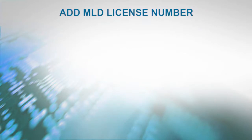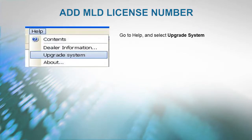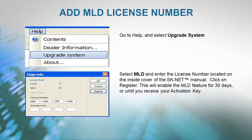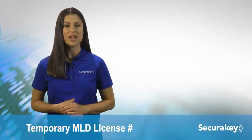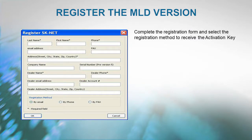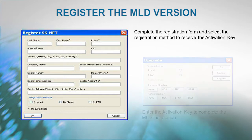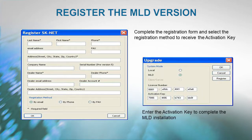To add an MLD license number, go to Help and select Upgrade System. Select MLD and enter the license number located on the inside cover of the SKNet manual, then click Register. This will enable the MLD feature for 30 days or until you receive your activation key. If you do not have an MLD license number, you may order it and use the temporary number shown on the screen. Complete the registration form, select the registration method to receive the activation key, and enter the activation key to complete the MLD installation.